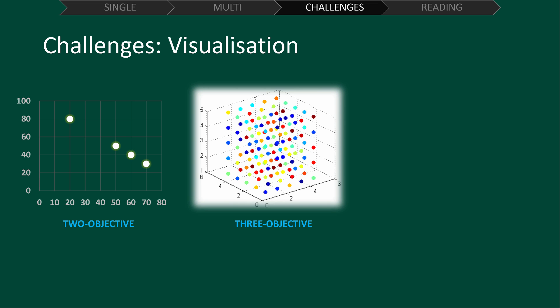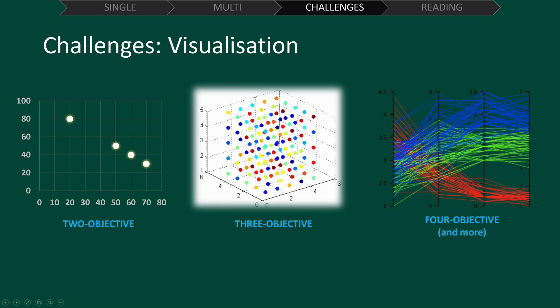Now, what if we want four objectives or more? This is where it begins to get very difficult. One popular way to visualize solutions which have four objectives or more is using parallel coordinate plots.